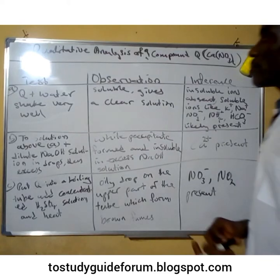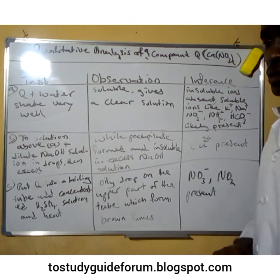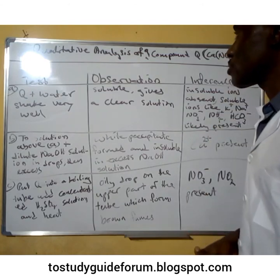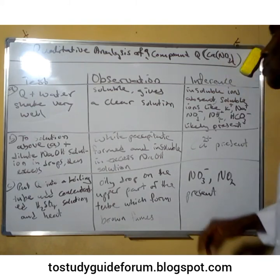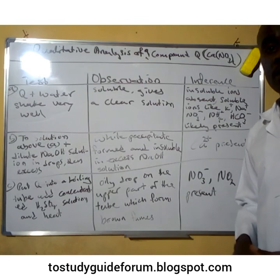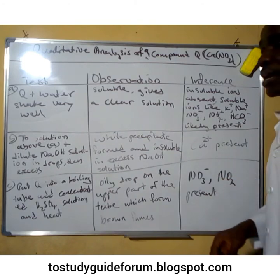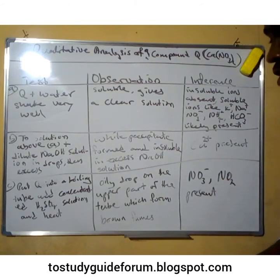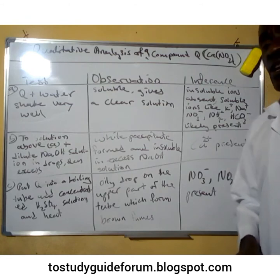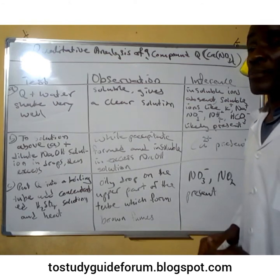Welcome to our class today. We are going to carry out a qualitative analysis of compound Q. That compound is known as calcium trioxonitrate(V). The goal is to identify the anions and cations in it. In our previous videos we covered analysis of some other compounds, but in this case we are focusing on calcium trioxonitrate(V).